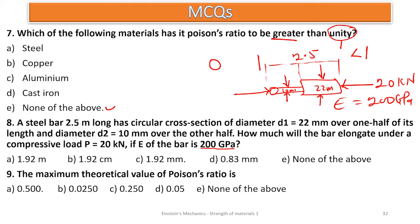Number eleven: the ability of a material to absorb energy without fracture is known as — if a material can absorb much energy without breaking or fracturing, that is toughness; that material is very tough. Number twelve: the slope of the linear portion of the shear stress-strain diagram — from Hooke's law, shear stress equals G times shear strain, and when we plot shear stress against shear strain to get a straight line, the slope of that line is the modulus of rigidity, G.